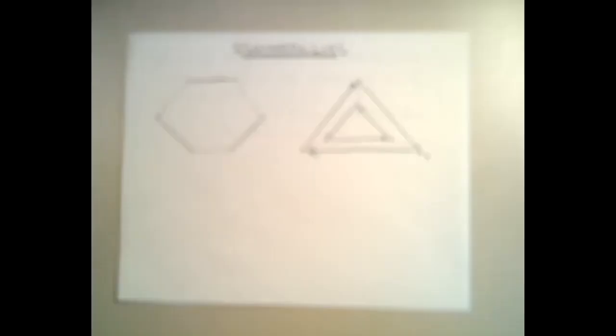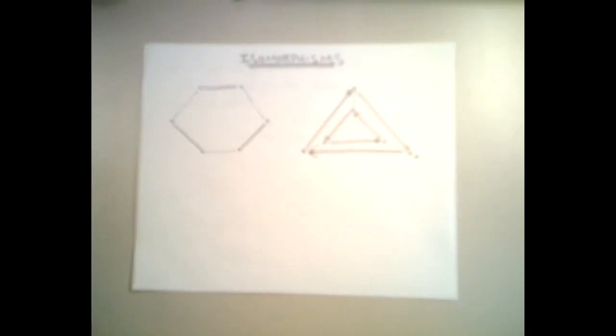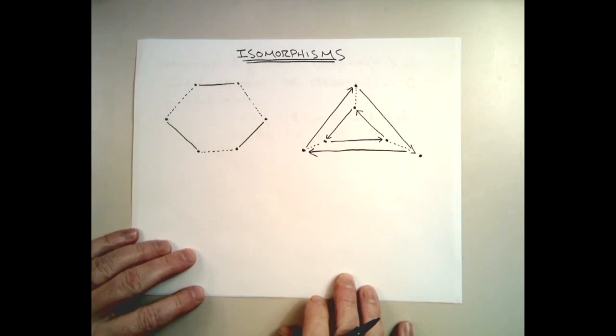At that time we had defined two groups to be isomorphic to each other, provided that they could both be represented by the same Cayley graph. One of the examples that we had looked at back then and since were the two groups that I have identified here, represented here by a couple of different Cayley graphs.